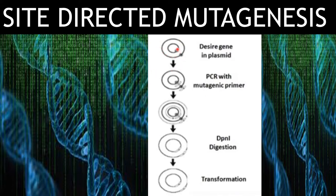The plasmid consists of a particular gene — for example, a gene that represents the size of a fruit. If this plasmid consists of a gene which represents a small size of a fruit, we want to remove that gene with the help of PCR using a mutagenic primer. This mutagenic primer consists of a gene which represents the bigger size of the fruit.